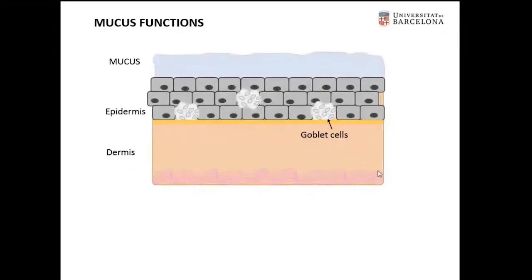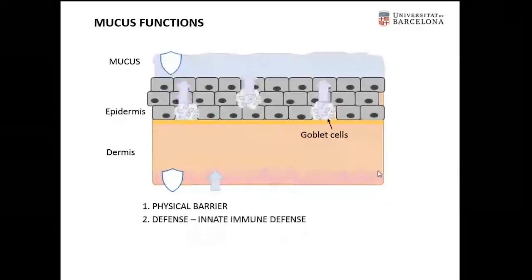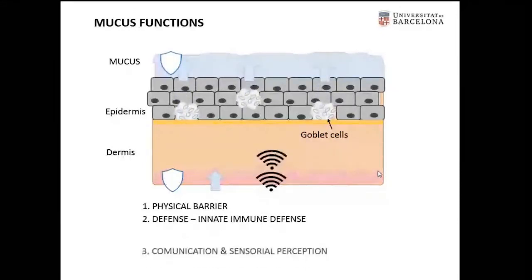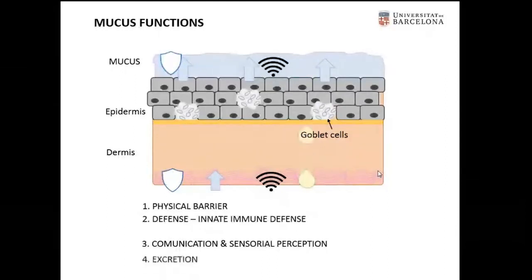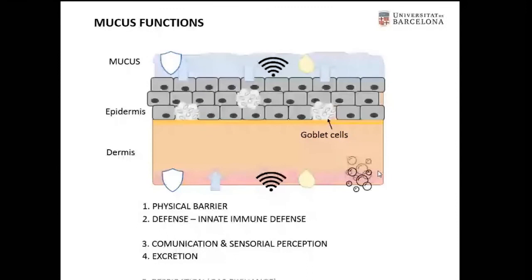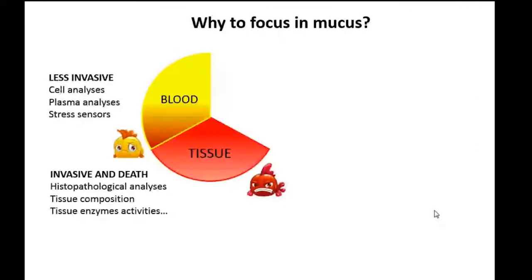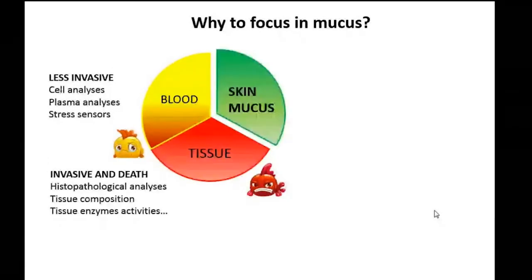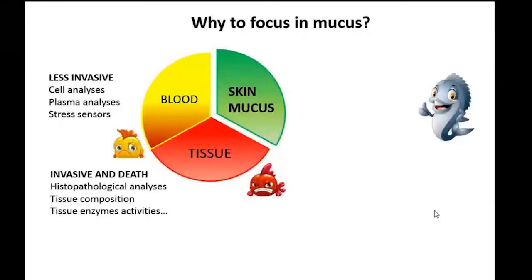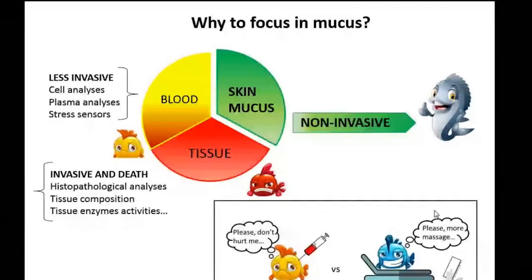The skin mucus participates in many physiological functions: it acts as a physical barrier, presents and secretes components of the innate defense, participates in communication, serves as a route for some excreted products, and also participates in respiration. Classical diagnoses are invasive — tissue sample collection is absolutely invasive and implies animal sacrifice, and blood extraction can add extra stress for the fish. We therefore propose the collection of this more external layer — the skin mucus — which can be considered a non-invasive or minimally invasive way to study fish health.